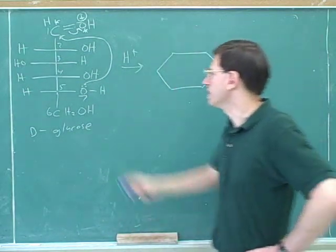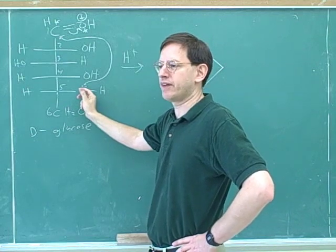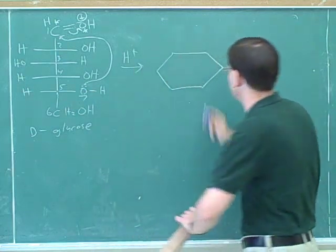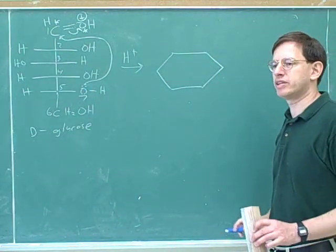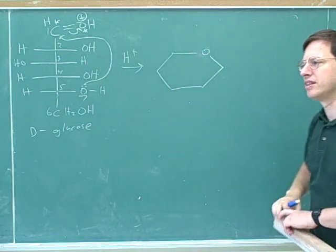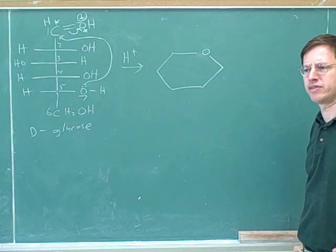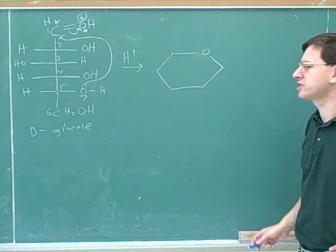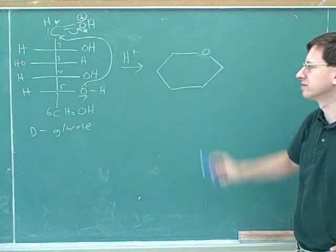And you might have already seen that the convention is to put the oxygen here. These are what are called Haworth projections. I don't know if your instructor used that term. The convention when we're drawing the cyclic form of the sugar is to put the oxygen here.